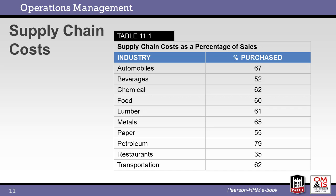In this table, we can see the impact of supply chain costs. Supply chain costs make up a major portion of the overall sales price. We see restaurants at the low end with 35% and petroleum at the high end with 79% of sales tied up in the supply chain.